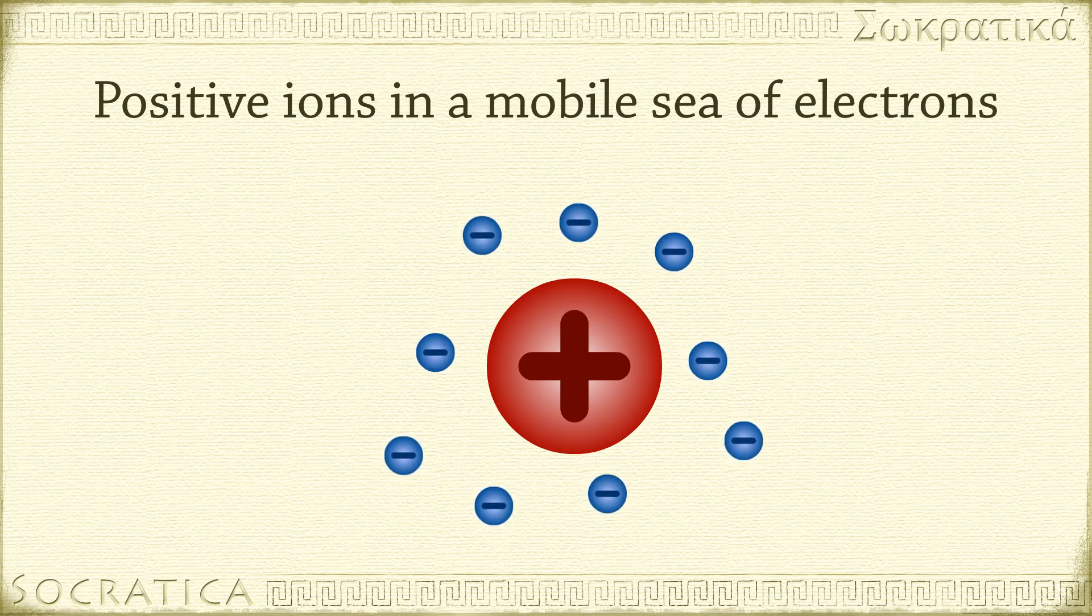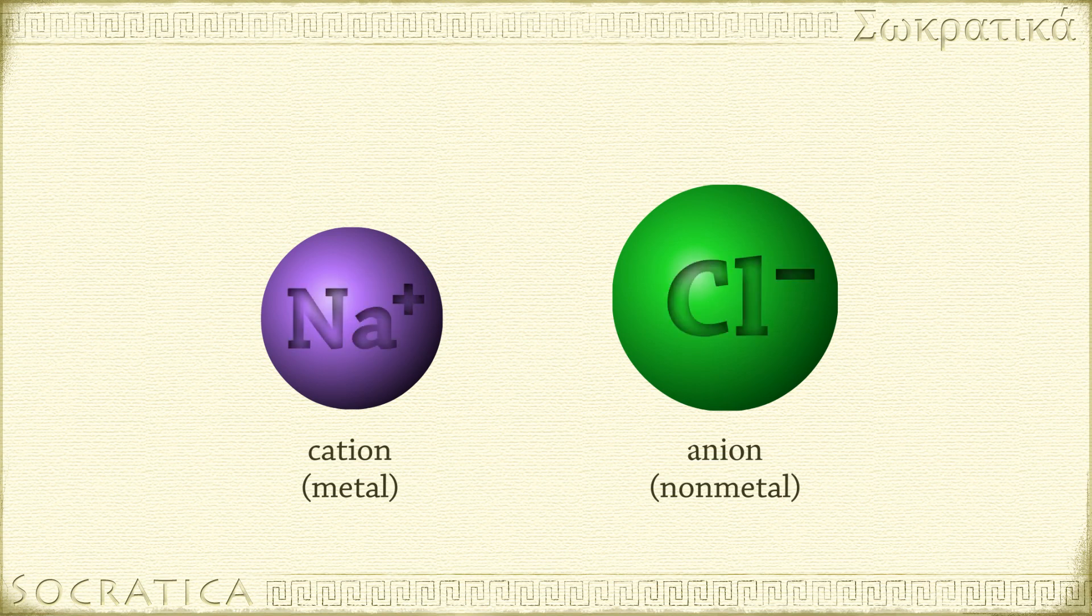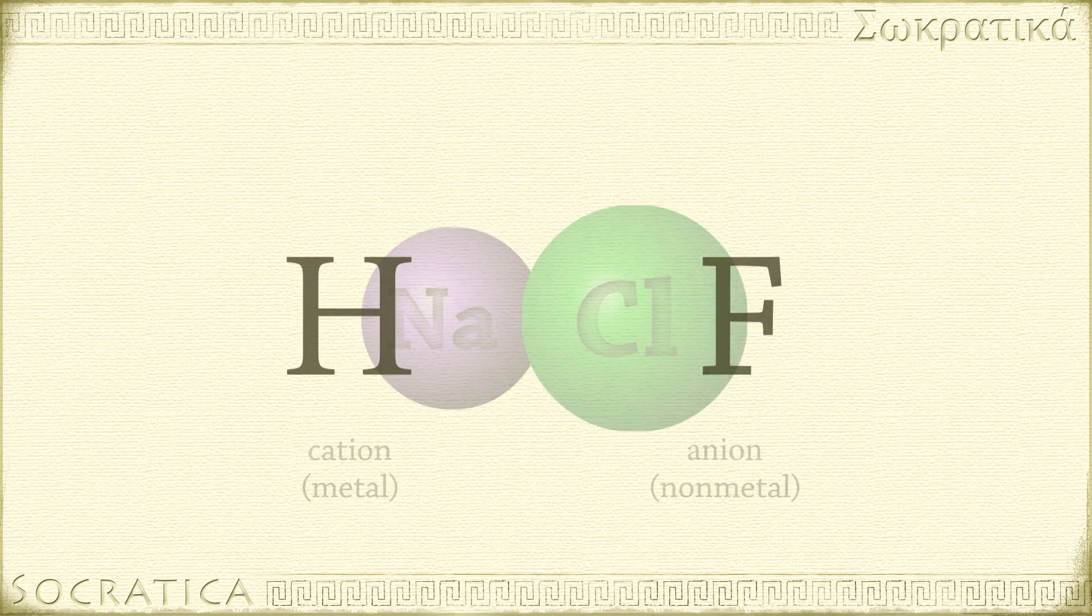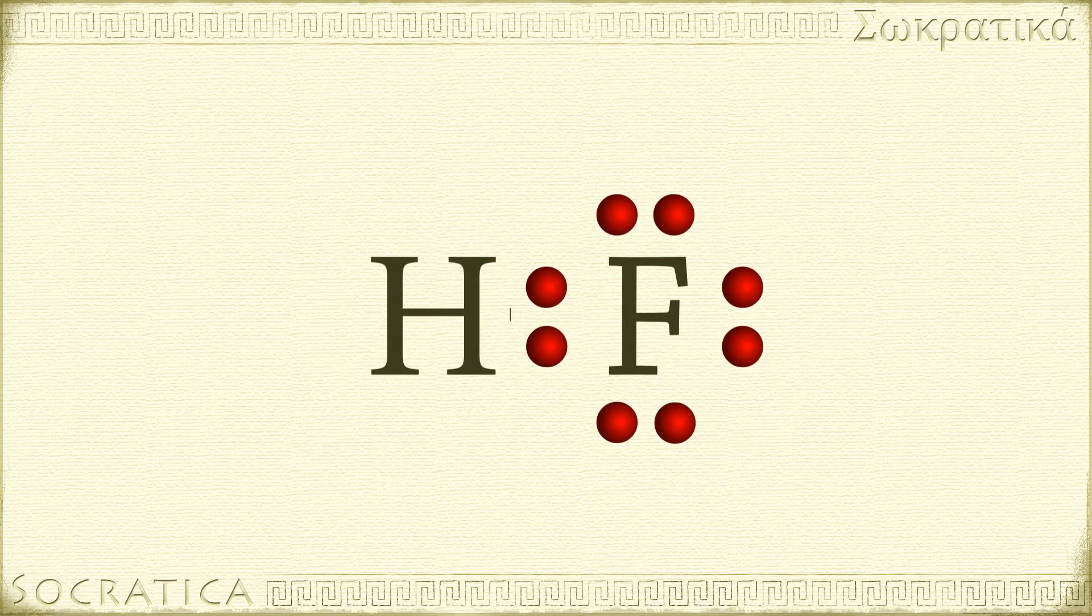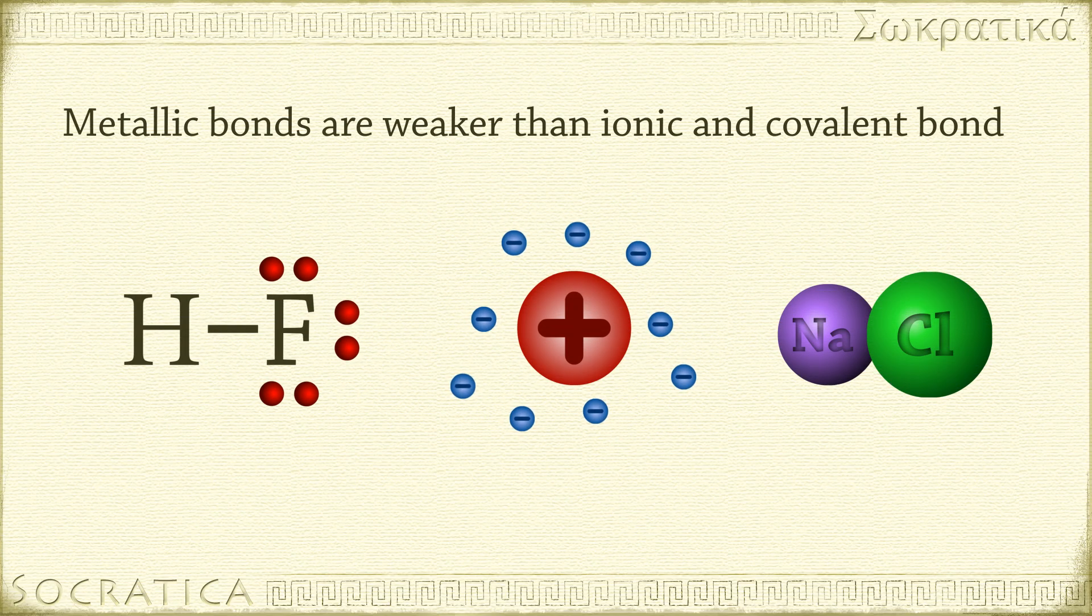Compare this image of a collection of cations surrounded by a mobile sea of electrons with ionic bonds, where oppositely charged ions are held together by electrostatic attraction, or covalent bonds, where two uncharged atoms share their valence electrons. Metallic bonds are much weaker than either ionic or covalent bonds.